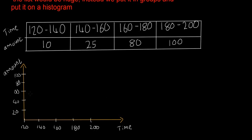Then you just fill it in. So the people who finished from 120 to 140, there was about 10 of them, so I'll fill that in there. 140 to 160, about 25 of them. 80 people finished between 160 and 180, and then 100 people finished here. There you go, and you can color in the histogram if you want.